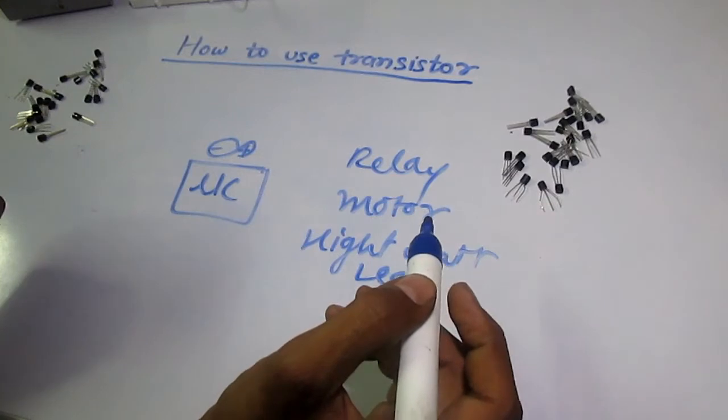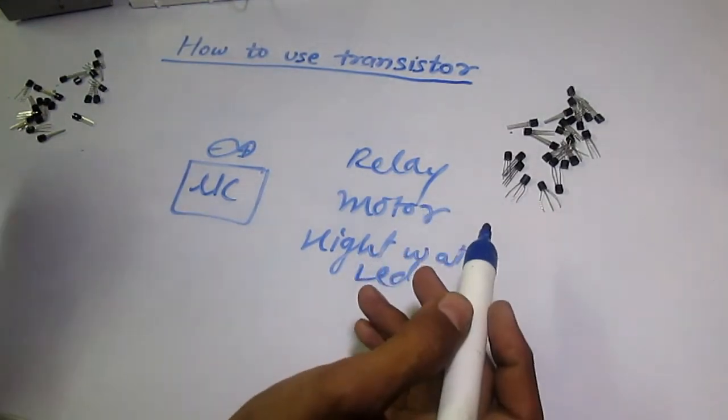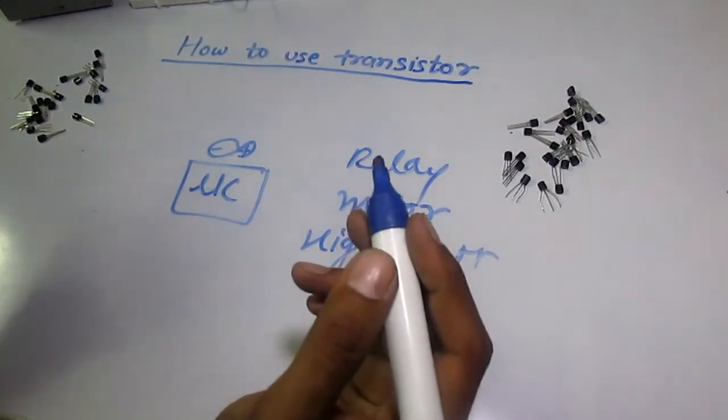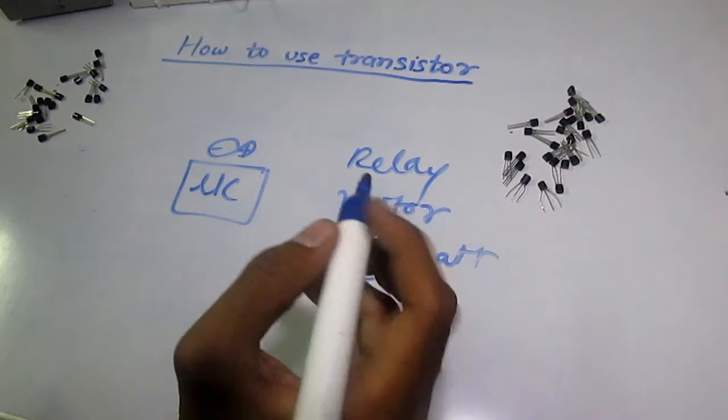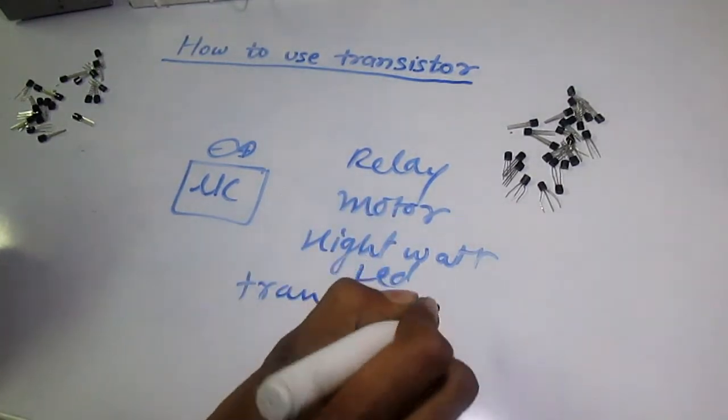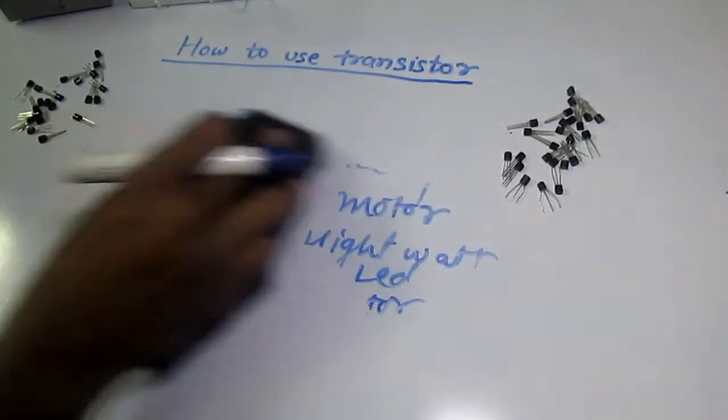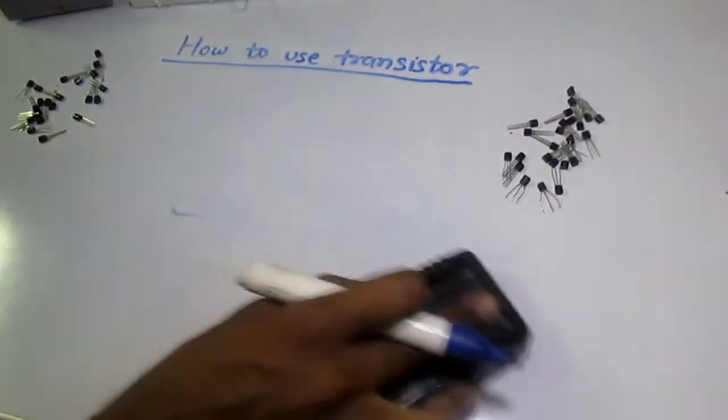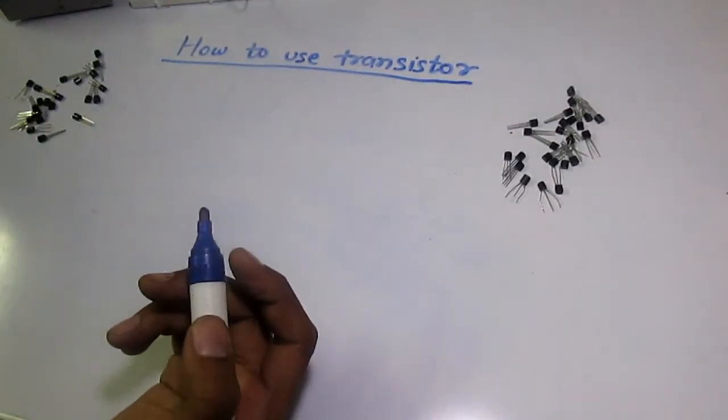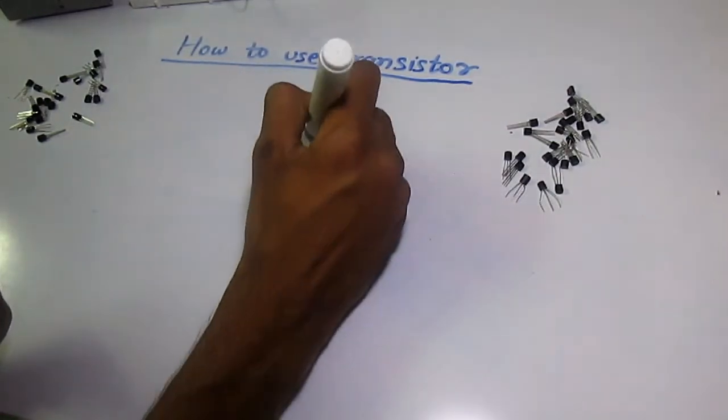For motors you might need a motor driver IC like the L293D, but the cheap way to drive any of these loads is to use a transistor. Transistors are really very cheap - you can buy one for just one to three rupees each. So how do we use a transistor?